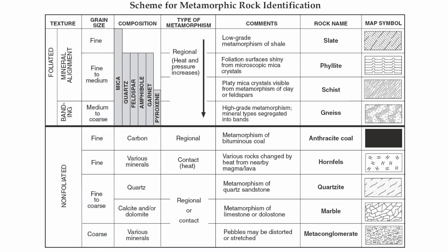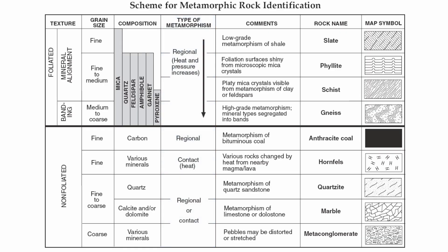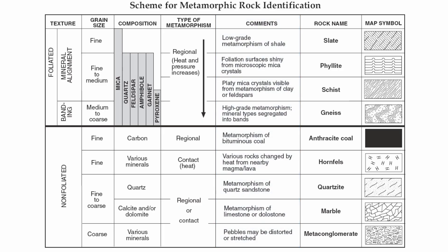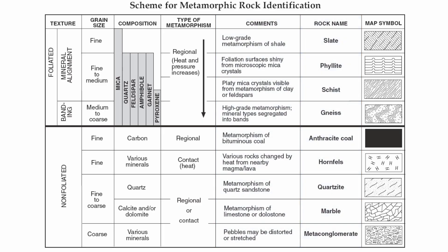Composition is going to be the actual individual mineral or minerals that make up your type of rock. Next over is type of metamorphism — regional versus contact. Next over is going to be your comments; very important information found in your comments. Next over is going to be your rock name, and then finally, your map symbol.